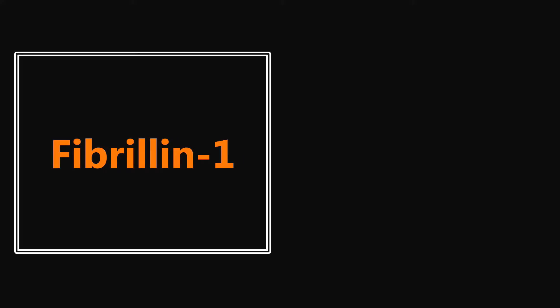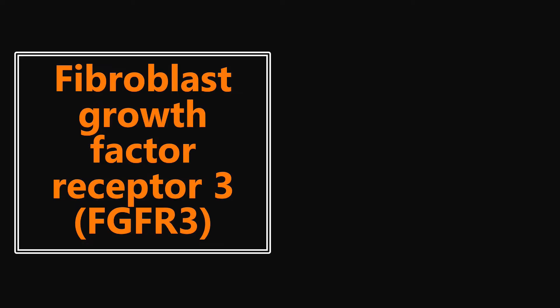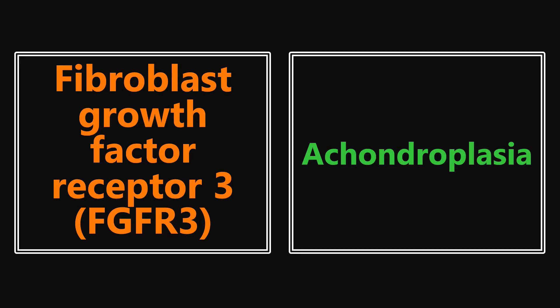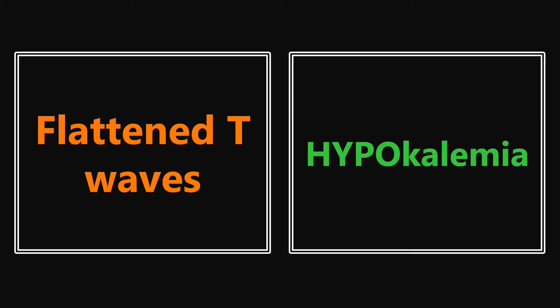The first one is Fibrillin-1. If you see this gene or protein product in a question, you want to be thinking about Marfan syndrome. The next one is Fibroblast Growth Factor Receptor 3 — if you see this, they're most likely referencing achondroplasia. Flattened T-waves, if you see this in a question stem or read it on an EKG, you want to be thinking about hypokalemia.